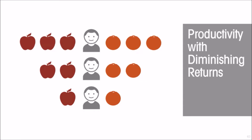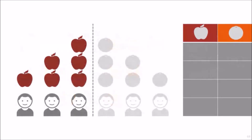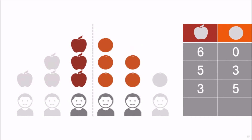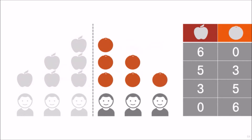Now let us construct the production possibility frontier and see what we get. If all of our capacity is producing apples, then we can get six apples and no oranges. If we have only two units in apples and one in oranges, we get five apples and three oranges. Or we can have three apples and five oranges. Finally, if all of our productive capacity is in the orange industry, then we have no apples and six oranges.